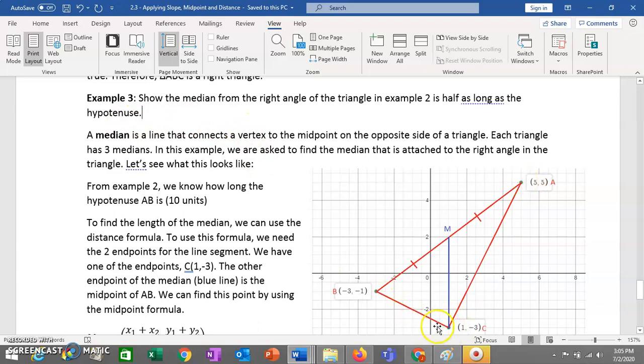A median is a line that connects a vertex, so one of your three points, to the midpoint of the opposite side. So we go from this point to the middle point on the opposite side. So this is a median, but all triangles have three medians. You can also go from this point to the midpoint on this side. And from this point to the midpoint on that side. But in this question, it says, show the median from the right angle. This is the right angle. So we're talking about this median specifically.